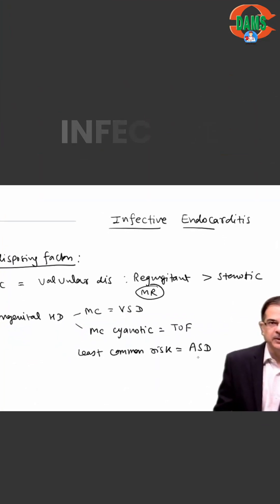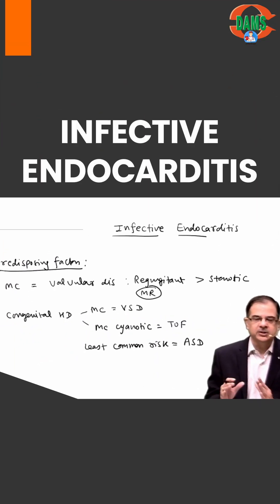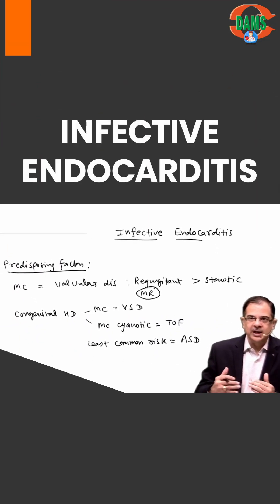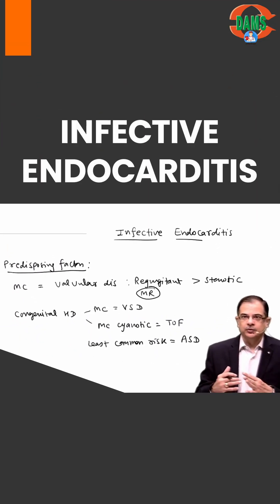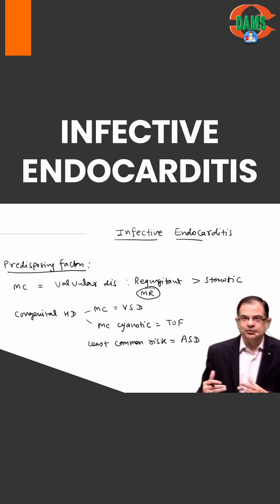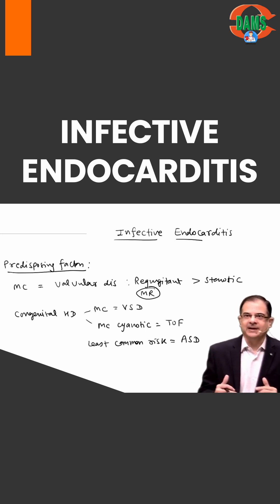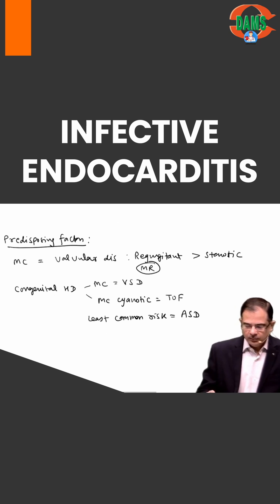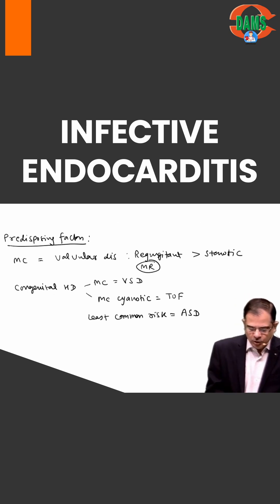ASD causes a very low gradient, so when the gradient is low, erosions will be low. Low erosions means the risk of infective endocarditis will be low — this is the most common non-cardiovascular risk.